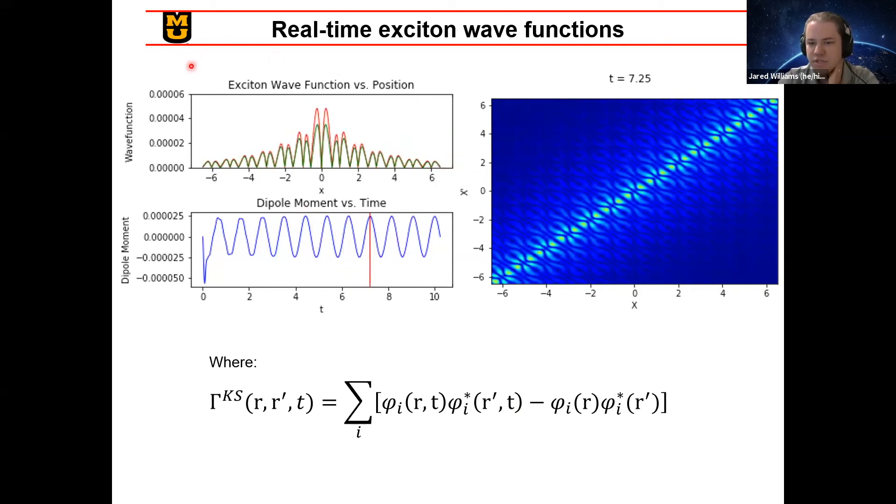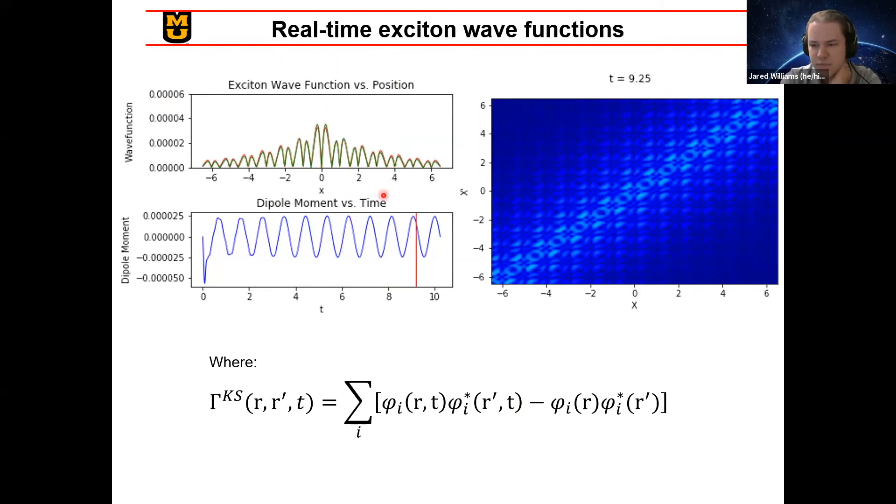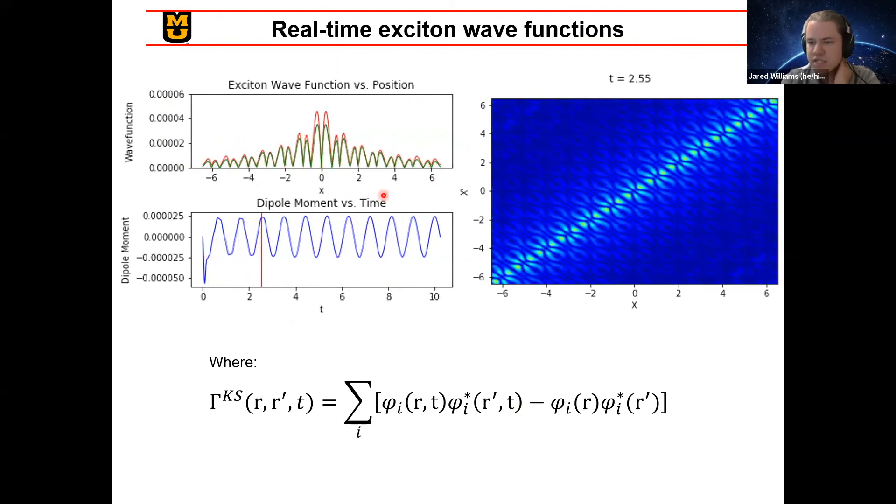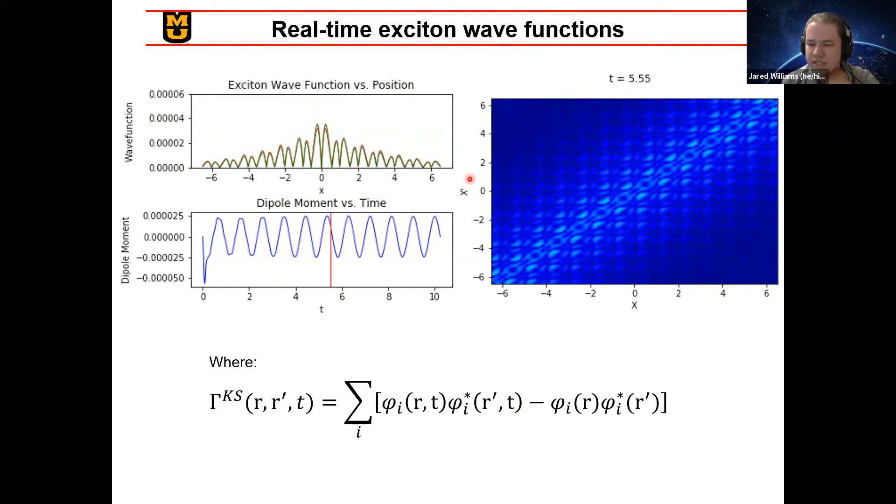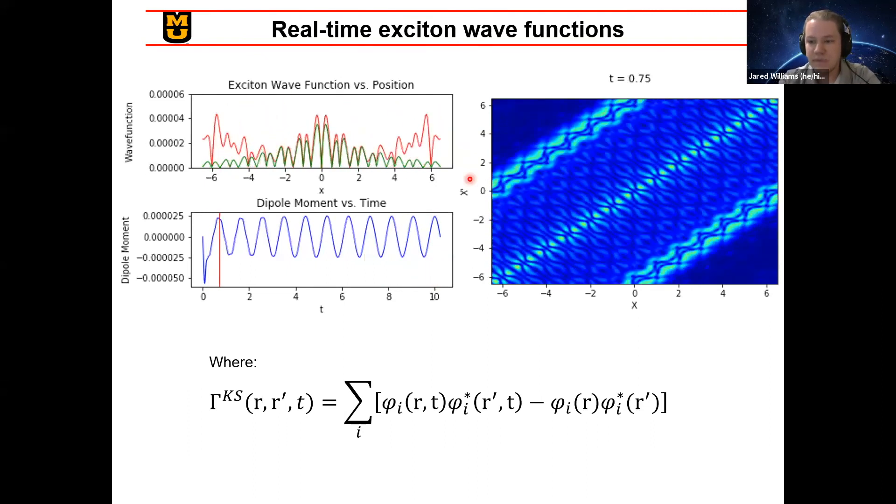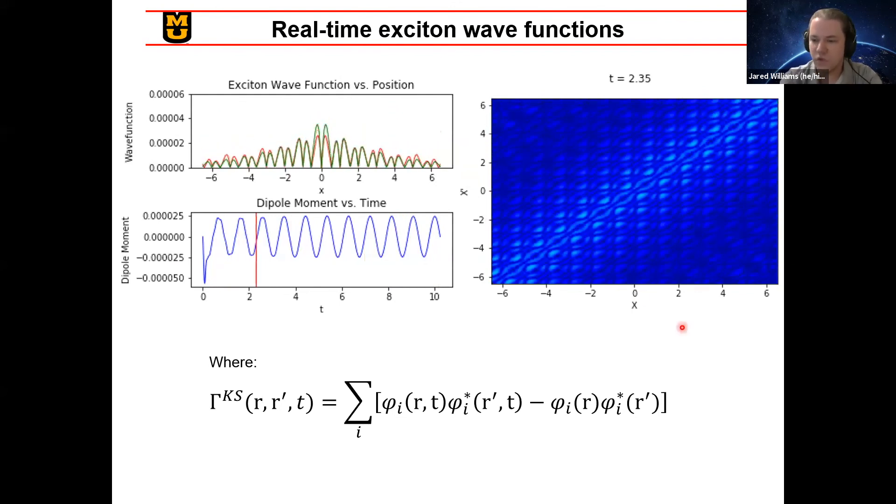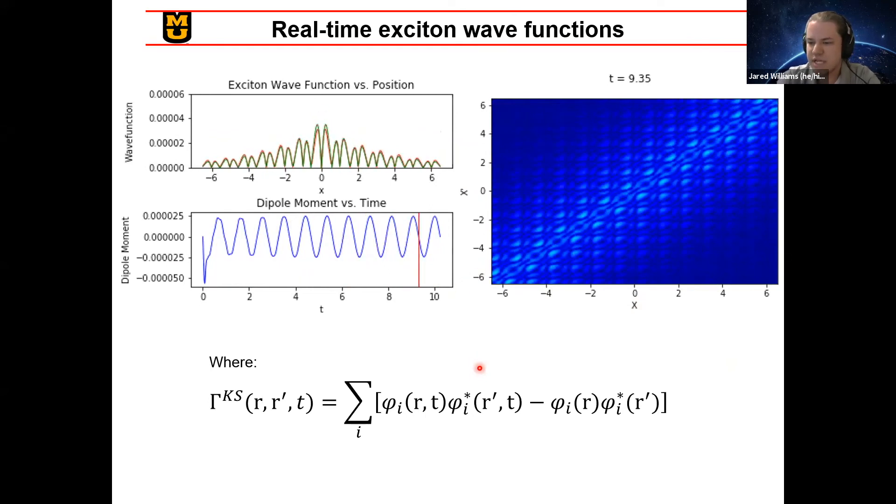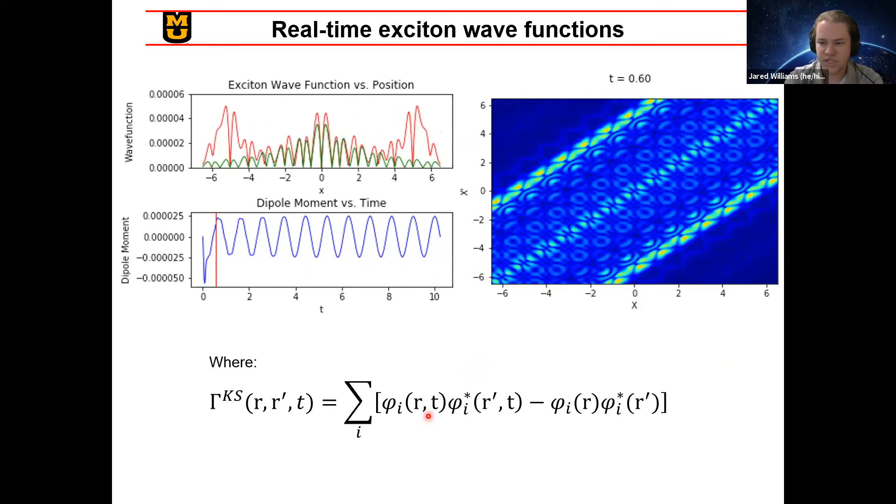So this upper left graph is a cut through the exciton wave function where we've taken and fixed the hole to be specifically at position zero. And so we're essentially looking at the distribution of the electron around it. And you'll see the static green line here is actually the exciton wave function calculated via the linear response method. So our method is showing very good agreement in shape and it's acting almost like an average of the time-dependent wave function. And on the right, you'll see the full wave function where the hole position is on the vertical axis and the electron position is on the horizontal axis. You see a strong collection of the exciton wave function along the x equals x prime diagonal there, because the electron and hole want to be close together when possible.